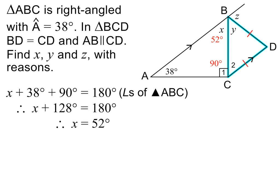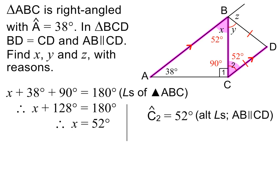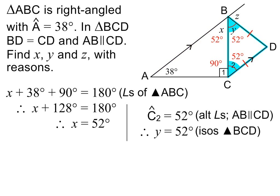To find y, you need to recognize that triangle BCD is an isosceles triangle. This means that angle C2 and y are equal. To find the size of angle C2, we need to use parallel lines as well as the letters Z or N. Angle C2 is equal to 52 degrees, because alternate angles are equal and AB is parallel to CD. This means that y is also equal to 52 degrees, and the reason is isosceles triangle BCD.